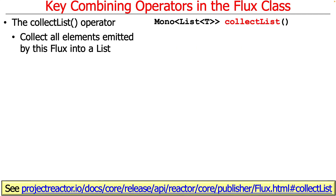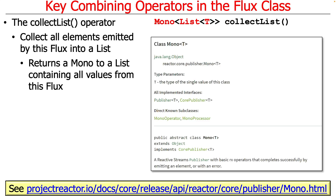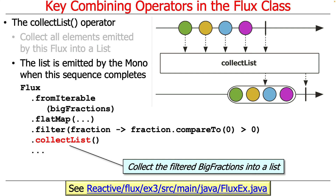Let's talk next about the collect list operator, which is similar to what we have in Java Streams. What this does is collect all the elements coming into the flux and put them into a list, returning a mono to a list containing all the values from the flux. The reason it returns a mono to a list is because we're trying to do everything in an asynchronous reactive way, so we don't want to block. The list is emitted by the mono when everything is done. You can see here we take a list of big fractions, do flat mapping and filtering, collect the results into a list, and let it work asynchronously in the background.